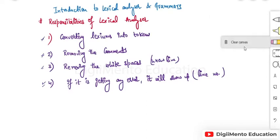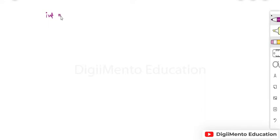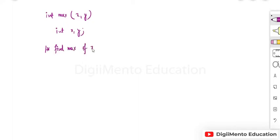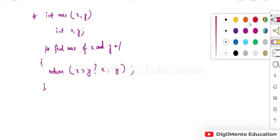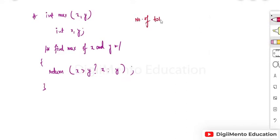Suppose a piece of code is given to you: int max, then int x comma y, and there is a comment — find max of x and y — and then a return statement. Now in this piece of code we have to find the number of tokens.